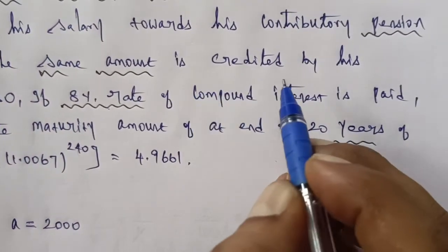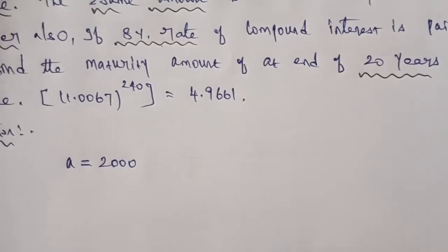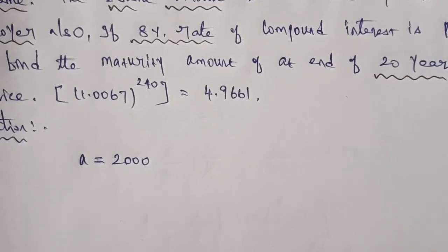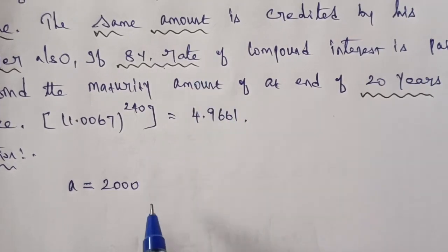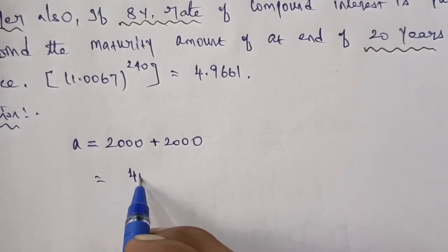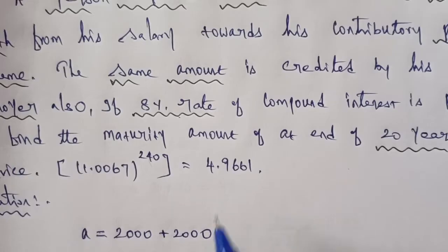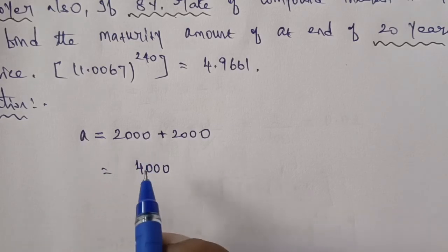The same amount is credited by his employer also. So the amount deposited to the pension scheme is 2,000 rupees by the employee and another 2,000 rupees by the employer. This means A is equal to 4,000. Every month A is equal to 4,000 amount.